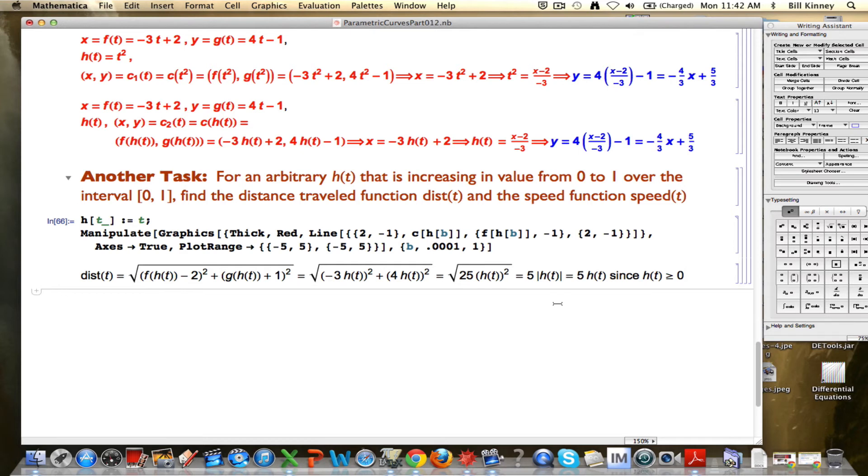Let's plot it. First of all, we'll define it here. I'm going to put the h of t down here as well. Okay, so I want to make changes there. The distance traveled function is going to be, in this situation, 5 times h of t. Let's plot it over the interval from 0 to 1. And let's make our plot range go 0 to 5 in both directions.